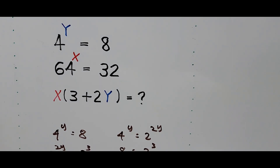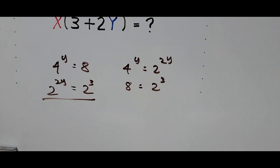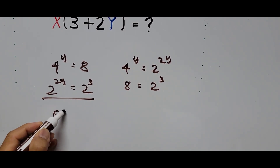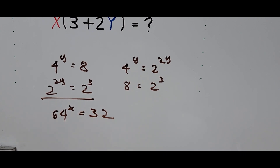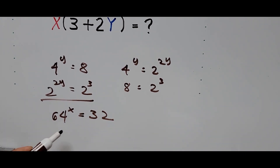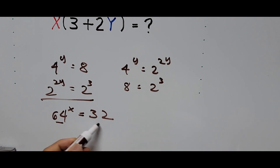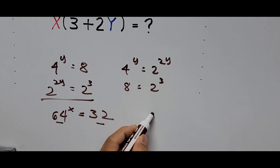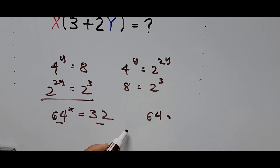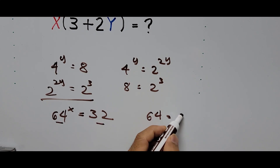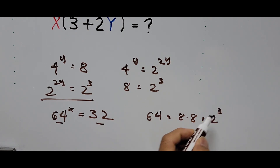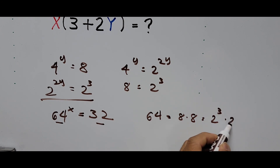We write down 64 raised to the x power equals 32. This exponential equation can be broken down into exponential form. 64 can be written as the square of 8 — that is, 8 times 8 equals 64 — and expressed in exponential form, that is 2 raised to the 3rd power times 2 raised to the 3rd power, which equals 2 raised to the 6th power.